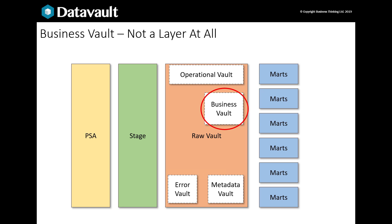Let's start by busting the first misunderstanding. The Business Vault isn't really a separate layer. It's not a separate schema — it's held inside the raw vault. The Business Vault adds new tables, but they're overlaid on the raw vault structure. Marts then feed from both the raw DataVault and the Business Vault tables.